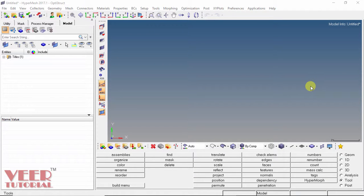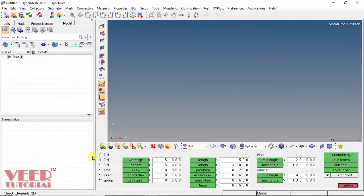Hello friends. In this video, we will know about different quality checks in the mesh. So we go to the option of tools and go to check elements. In this check elements, we have 1D, 2D and 3D. Right now we are concerned with 2D elements. So select 2D.